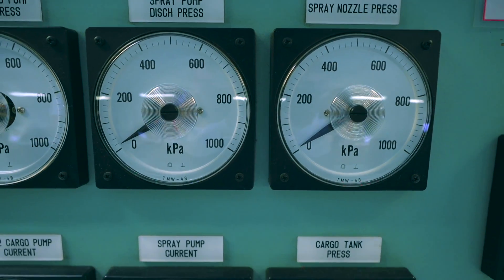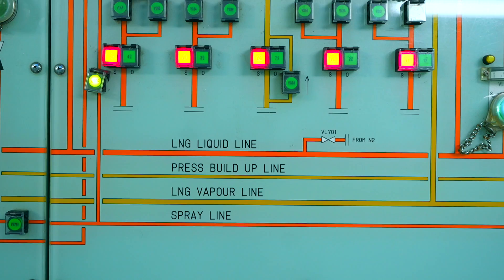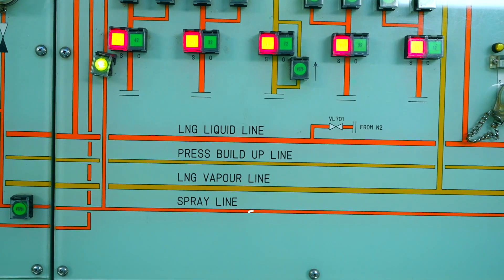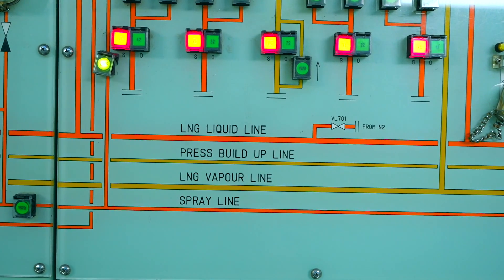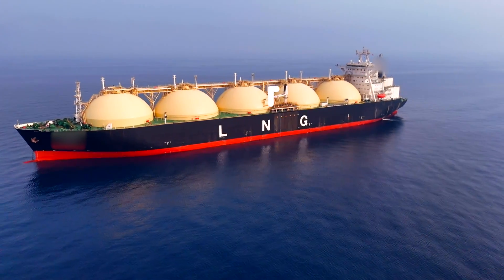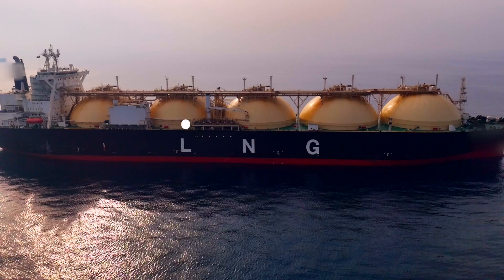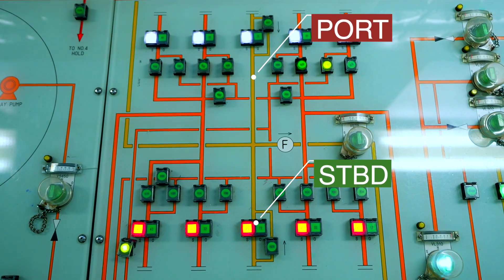All tanks are connected by one liquid line for loading or discharging, one spray line for cooldown and one vapor line for vapor return. The terminal connects its loading or discharging arm to an area called manifold. It's either in starboard side or port side.